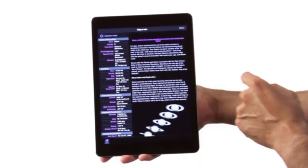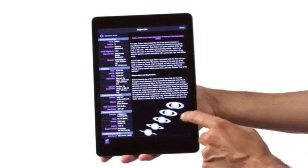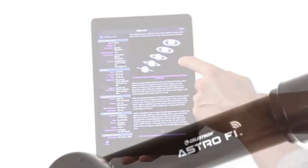Just tap the object you want to view on your screen and your telescope will point to it while keeping it centered in the eyepiece for comfortable, extended viewings.